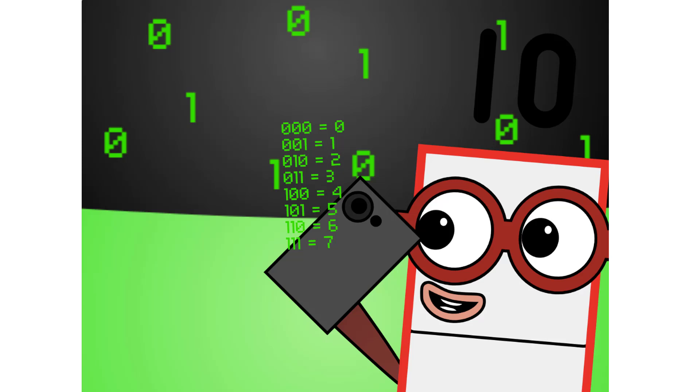There are 8 different combinations of 3-digit numbers in binary. This means that binary can easily be coded into octal. There are also 16 different combinations of 4-digit numbers in binary. This means that binary can easily be coded into hexadecimal too.